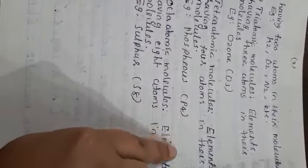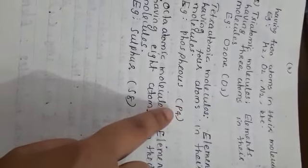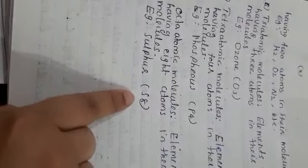Next one is tetraatomic molecules. Elements having four atoms in their molecule are called tetraatomic molecules. Example is phosphorus, P4.